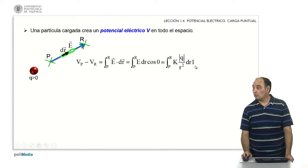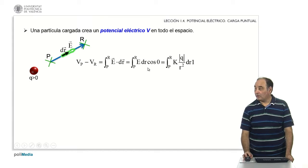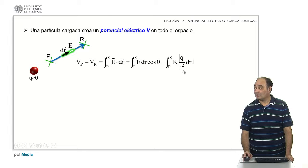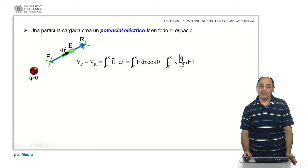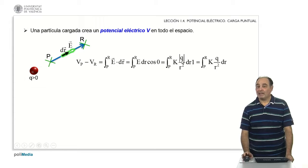The cosine of 0 is 1, and the modulus of the electric field, as we know from lesson 3, is given by: electric constant times the modulus of the charge divided by the distance squared. The modulus of a positive charge is itself. So I am left with this final expression.